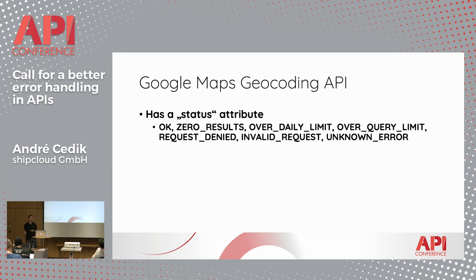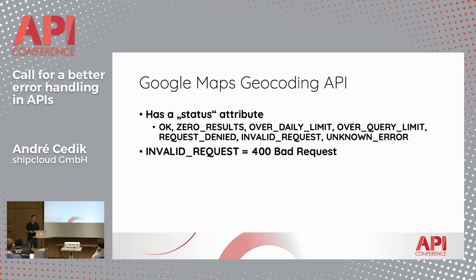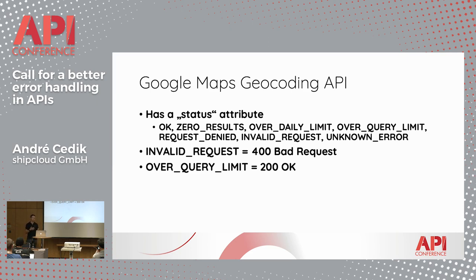Not even Google is immune to bad error communication. When making requests to their Google Maps geocoding API, the response contains an attribute called "status" that can have one of seven values. Interestingly, even Google wasn't able to map an HTTP status code to each of those statuses. While a 400 bad request gets returned when the response has "invalid request" as status, a 200 OK will be returned when the status is "over query limit" — where one would normally return something like a 429 too many requests.